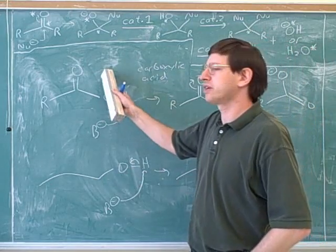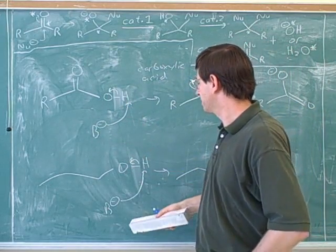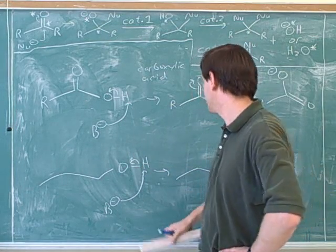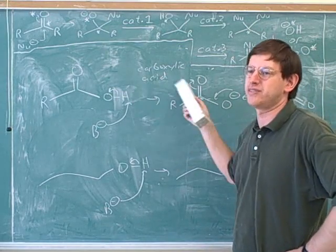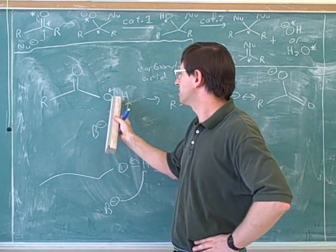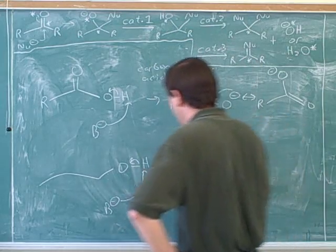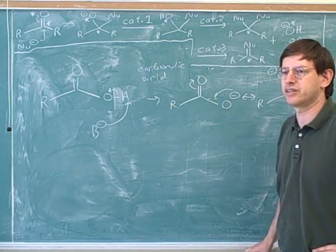All right, so now we've explained why this is called a carboxylic acid. Last term, I made the very witty joke that we don't call these alcoholic acids. Well, now we can see why these are not called alcoholic acids, because their conjugate base is not stabilized. And this is called an acid because it is acidic. Its conjugate base is stabilized. That's why it's not good to consider this an alcohol, because it doesn't behave the same way as an alcohol. That's really the big theme of this whole term. How does resonance change things?